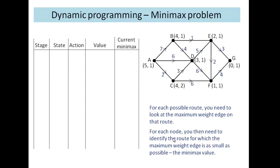The idea of a minimax problem is to make that maximum weight edge as small as possible. We carry out our tabulation in exactly the same way as we do with a maximum or minimum problem. But instead of having the total in this column, we just look at the current minimax. In other words, we're looking at the maximum weight edges and we want a route where that maximum weight edge is as small as possible.